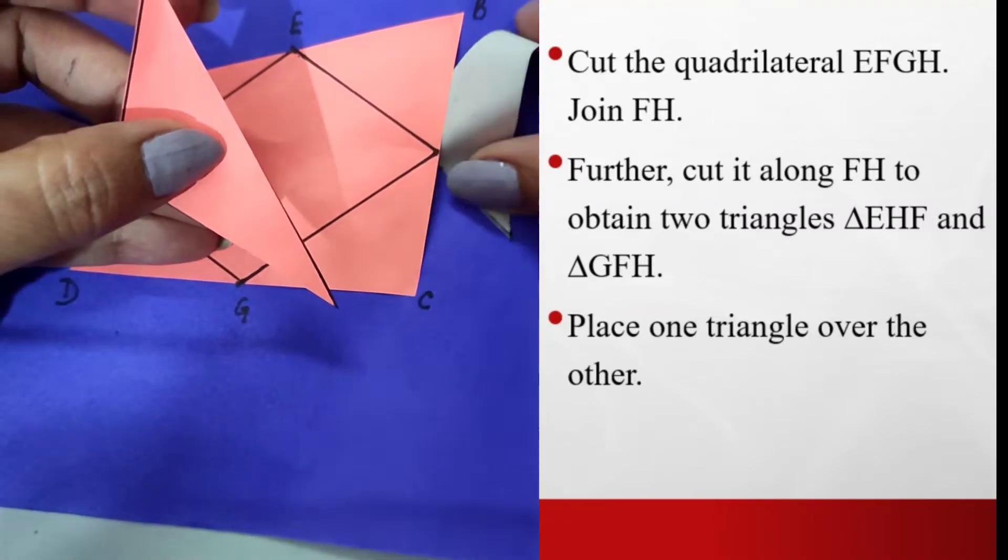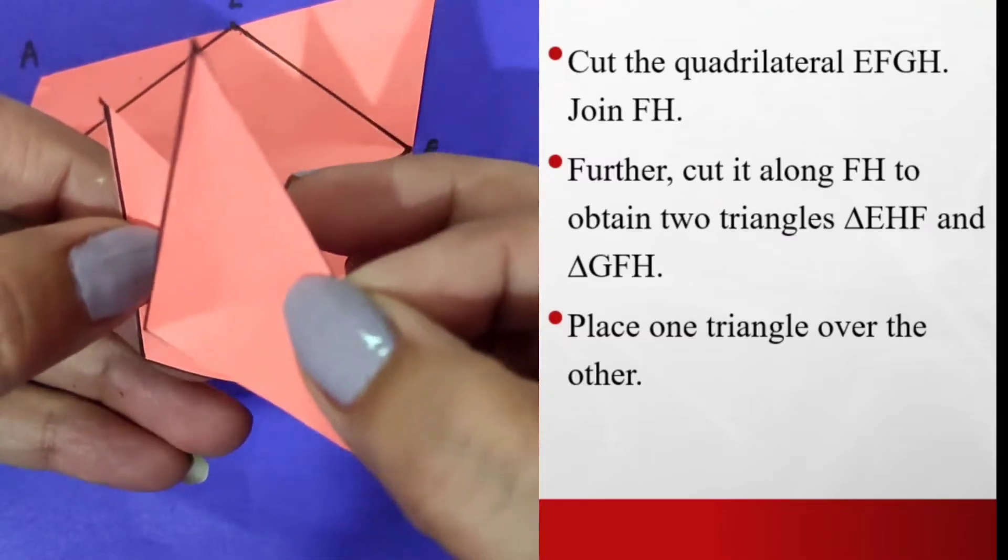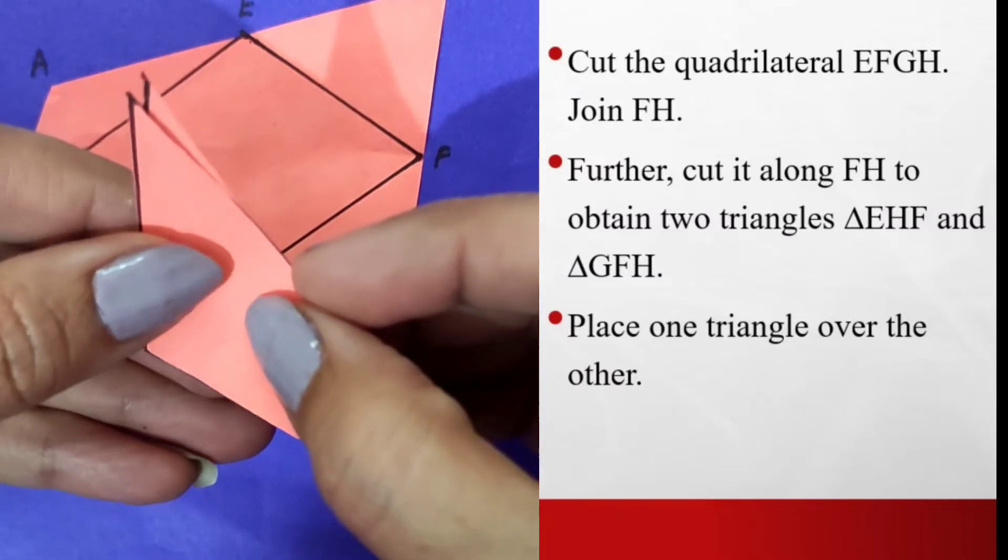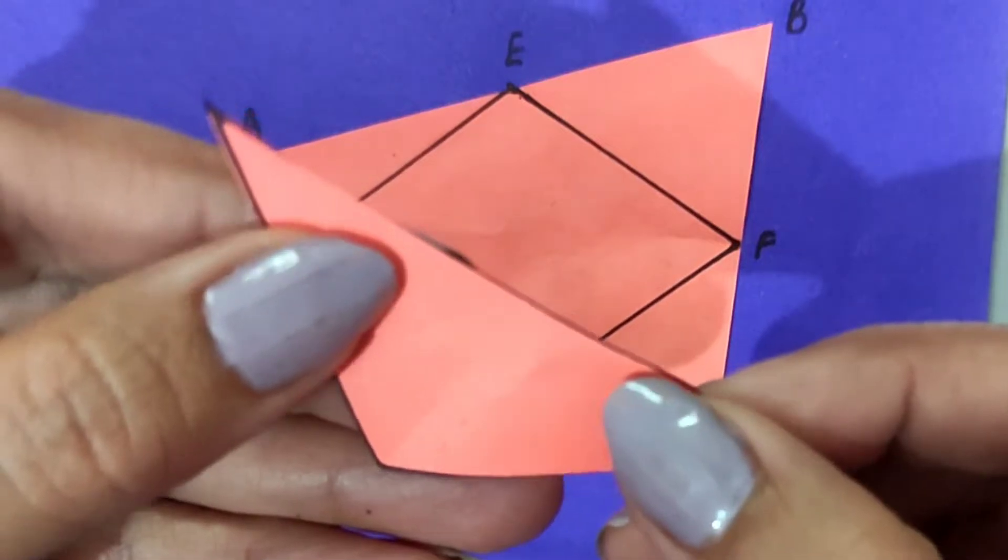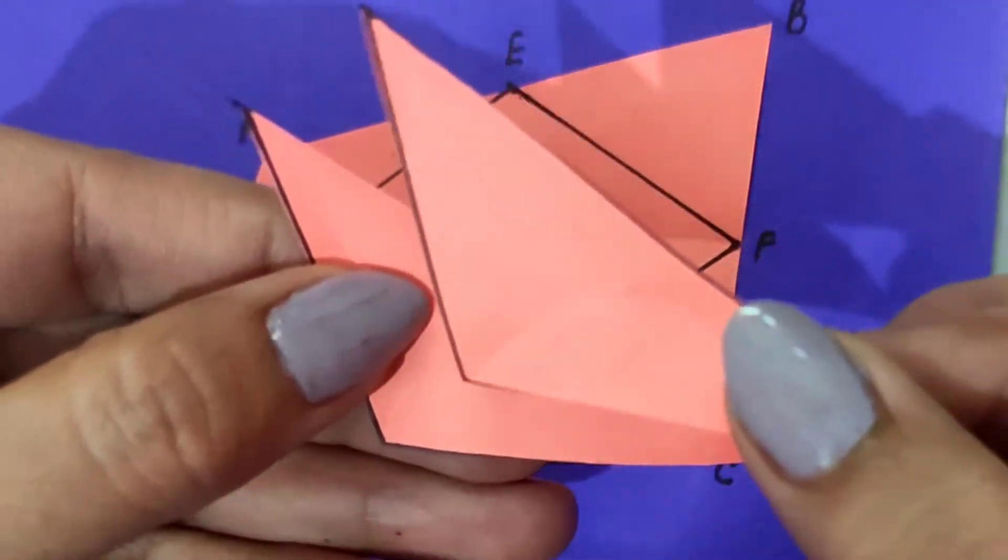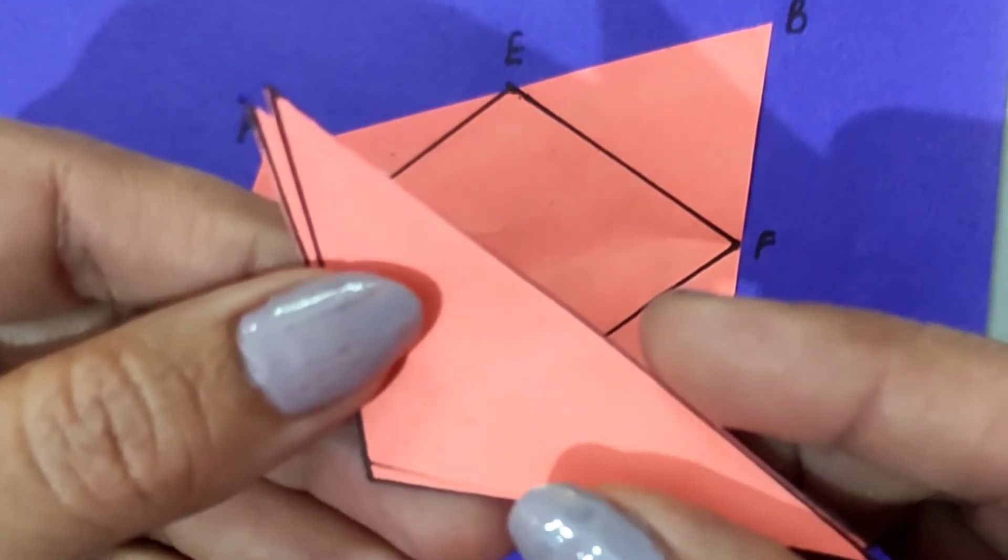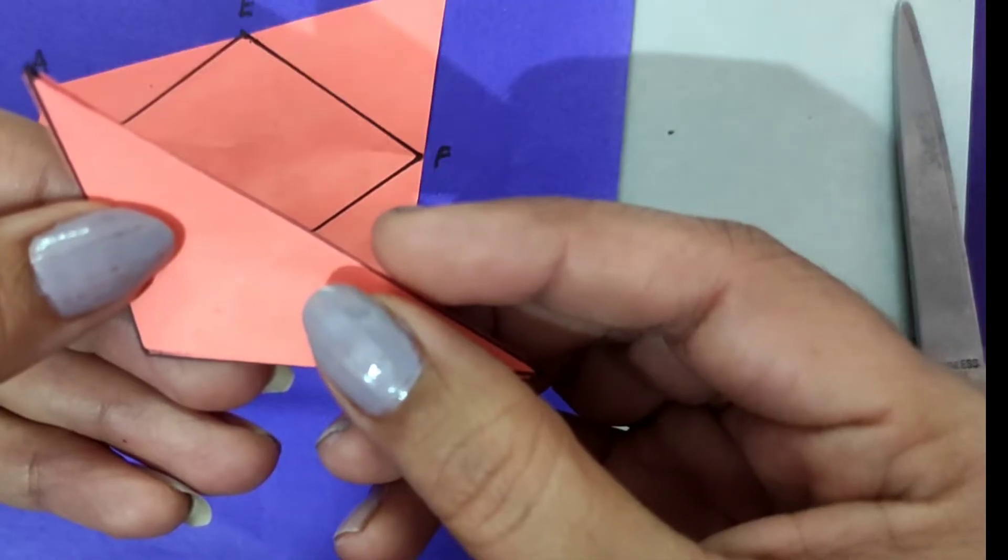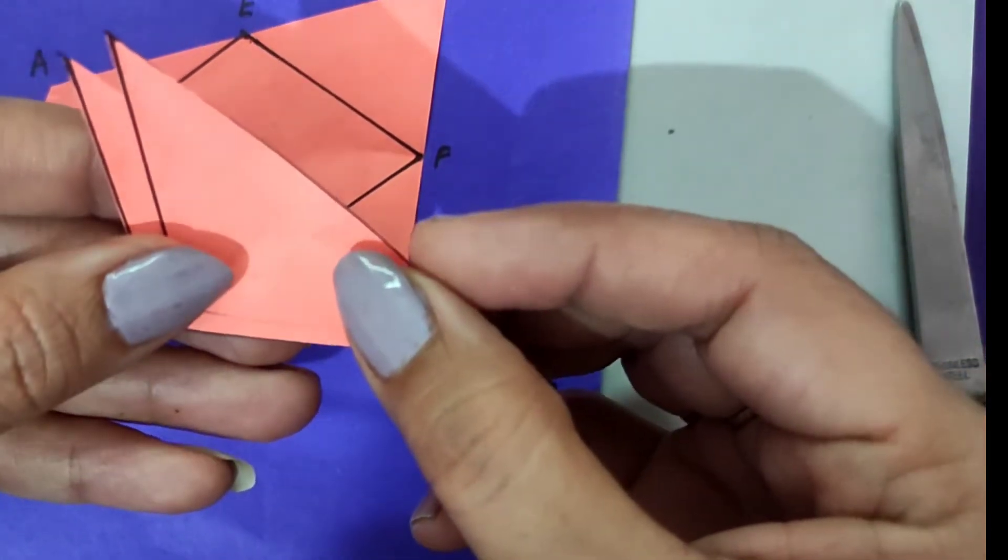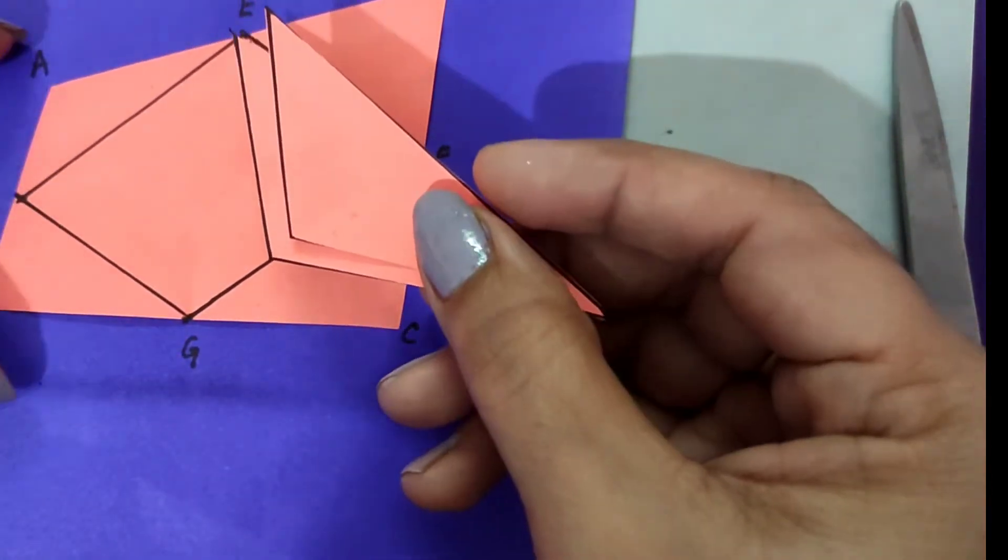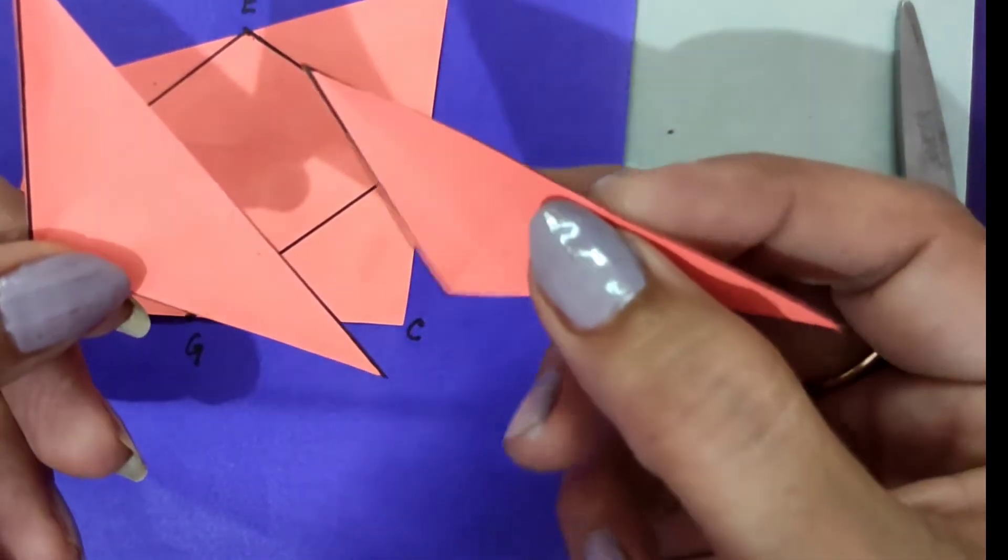You can see that I have got two triangles now. So if I place one triangle over the other, you can see that it completely superimposes the other one. That means that this diagonal has divided the quadrilateral obtained into two congruent triangles. And what is this property? Is it not the property of a parallelogram that the diagonal divides the parallelogram into two congruent triangles? That means that the quadrilateral that was formed by joining the midpoints of the quadrilateral is a parallelogram.